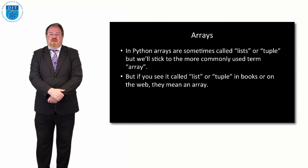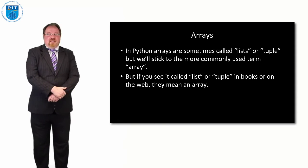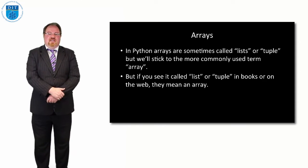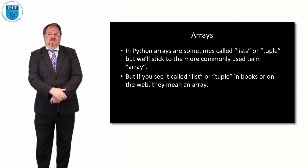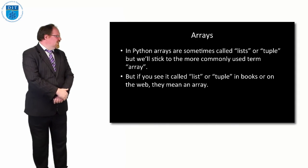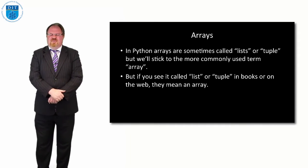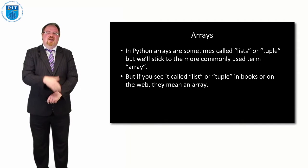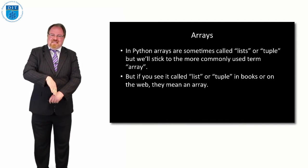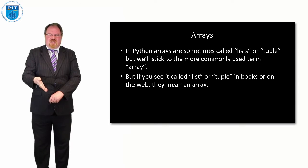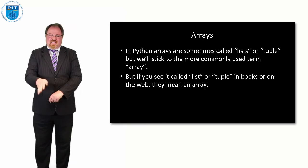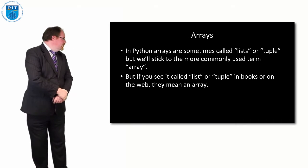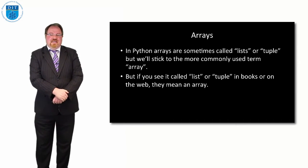We'll start off by looking at how Python implements an array. Python typically calls an array a list or a tuple. A tuple is a mathematical term that means a pair. I find we use the word list in an awkward way, so we'll stick with the word array. If you're online and you see them talking about lists, they're talking about arrays. There's another structure called a linked list we'll look at later that is not the same thing — that's why I prefer the terminology of array rather than list or tuple.